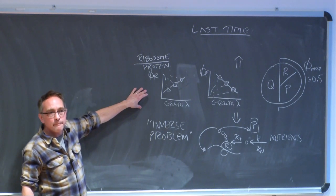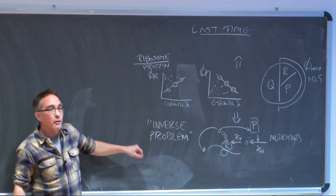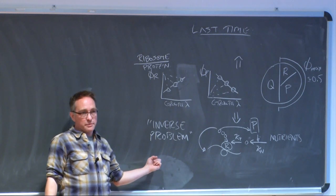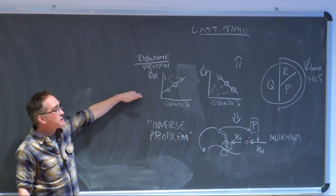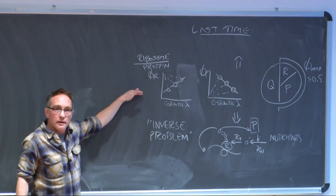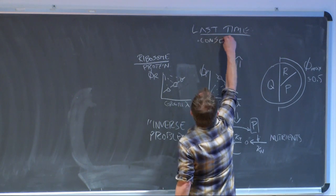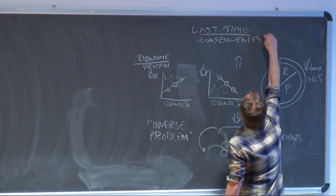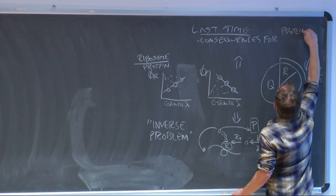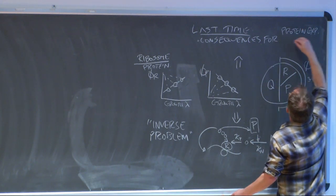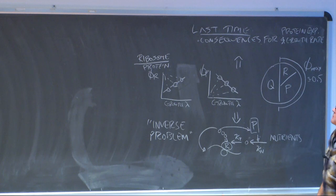These empirical constraints are much more important because they're much more reliable — they don't require any inference. So what I want to talk about today, instead of that inverse problem, is a forward problem: given that these are our empirical constraints, what can we use them for? The first consequence is the coupling between protein expression and growth rate.